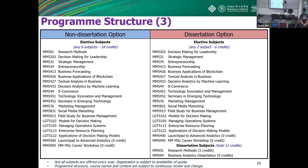For the dissertation route, you can choose any two electives and then take research method as a prerequisite, followed by the dissertation which is equivalent to three courses. Usually students who take the dissertation need to solve a very complicated problem, but eventually they can get a better job because nowadays a lot of companies like people who can handle very complicated problems. There are many examples indicating that students taking the dissertation have a better career prospect.